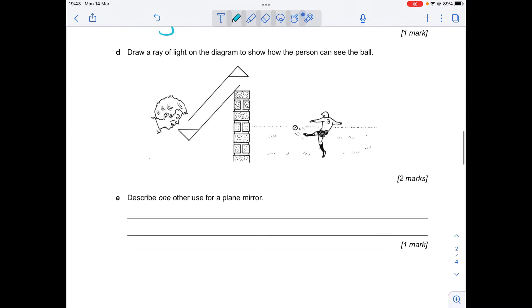Okay, next question. Draw a ray of light on the diagram to show how the person can see the ball. So remember that these are mirrors here. So we know that light is going to reflect off those mirrors at the same angle they bounce on.